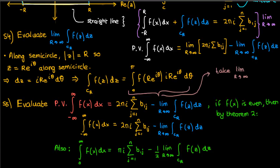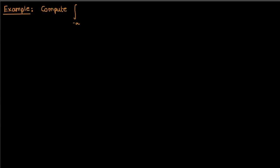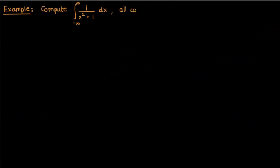That should cover the technique for computing improper integrals by the residue theorem. Let's put everything into context with a quick example. We want to find the improper integral of 1 over x squared plus 1. Checking the four conditions: f of x is a rational function, the coefficients are all real, there's no common factor, the degree of the denominator is 2 greater than the degree of the numerator (x² vs x⁰), and the denominator has no real zeros. So we can proceed.